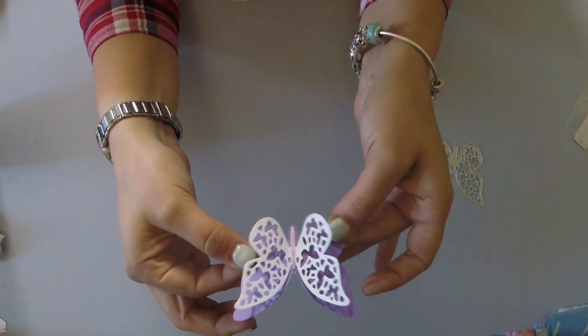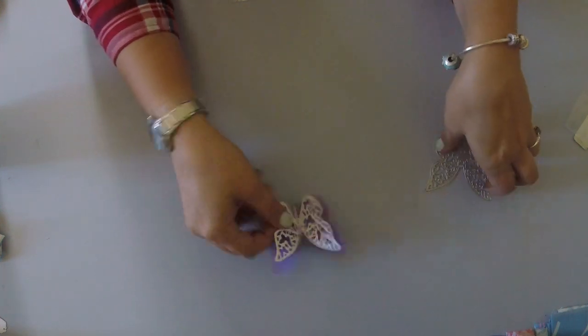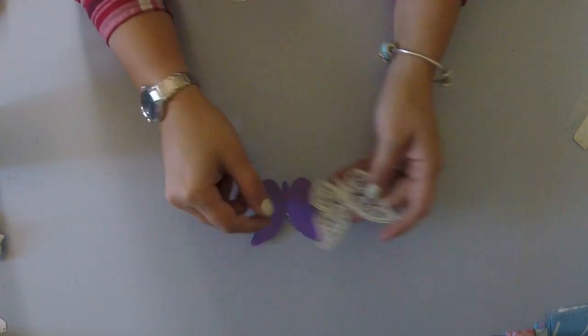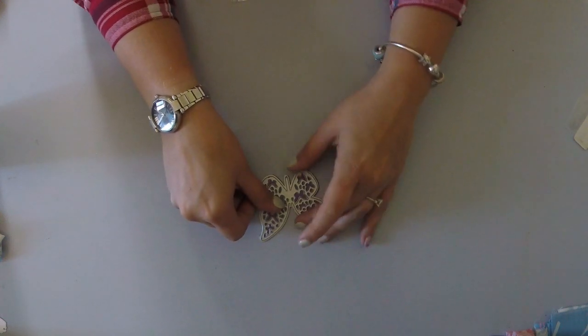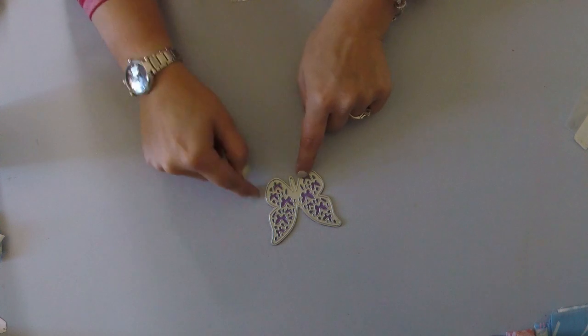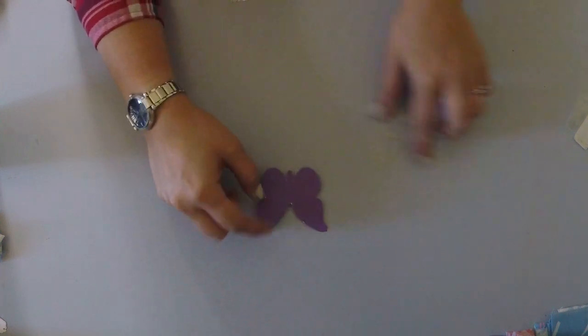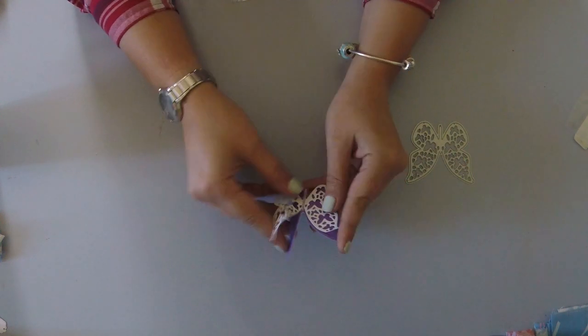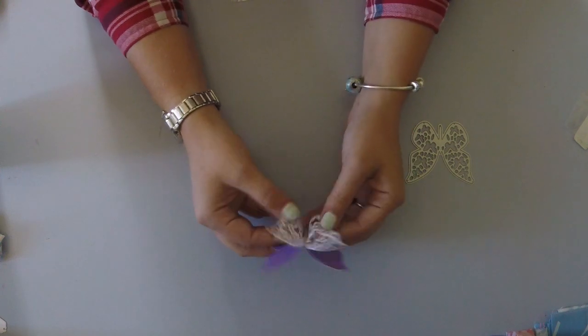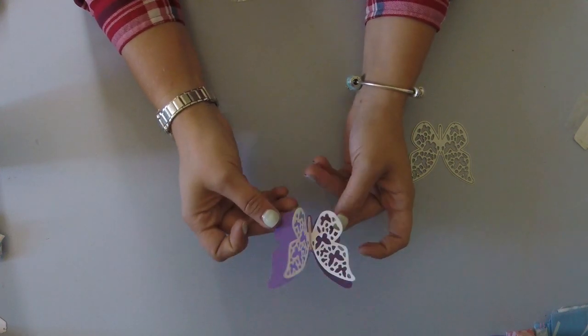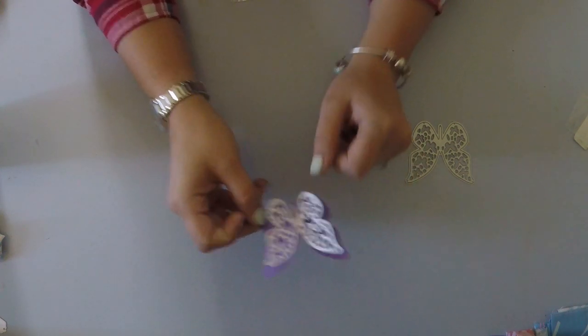And then to make this particular design I then took the purple paper and I just traced the outside of the die and then fussy cut it and glued the actual die cut onto the center and folded the wings up. So this is really cute.